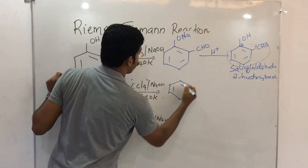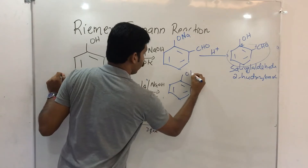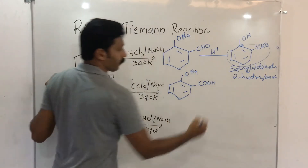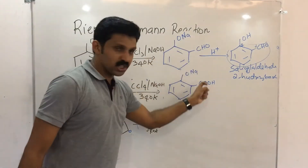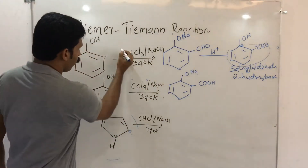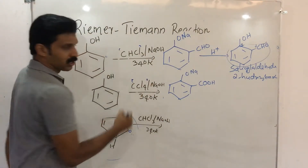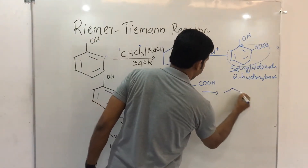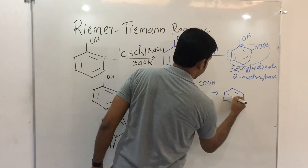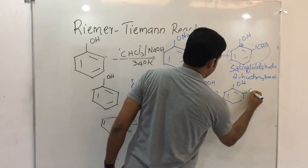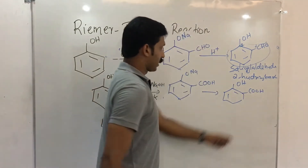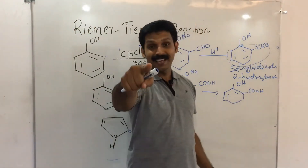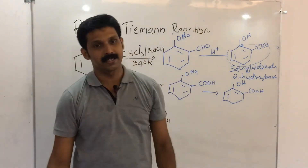In the first stage you get CHO — that is salicylaldehyde. When you use carbon tetrachloride instead of chloroform with NaOH, and acidify the product, you will get COOH instead of CHO. That gives you salicylic acid. So CHO gives salicylaldehyde, and COOH gives salicylic acid.